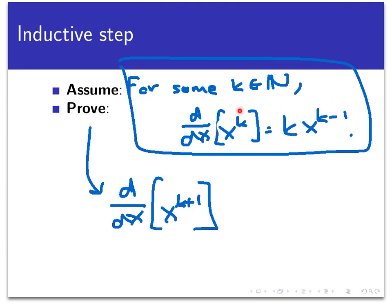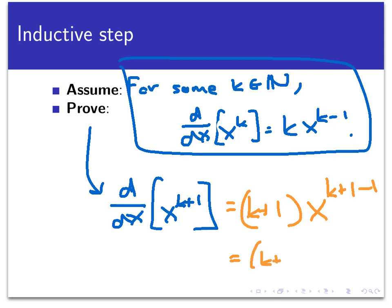We need to prove that the derivative of x^(k+1) equals (k+1)·x^((k+1)−1), which simplifies to (k+1)·x^k. You have to be very careful about what you want to assume versus what you're trying to show — these two things do not mix together. The inductive hypothesis is our assumption, and d/dx[x^(k+1)] = (k+1)·x^k is what we're trying to show. We'll keep them separate and move on to the proof.